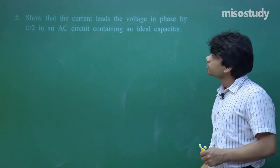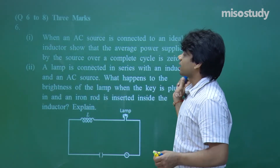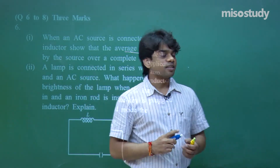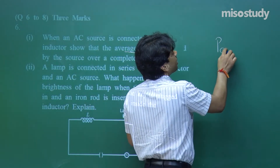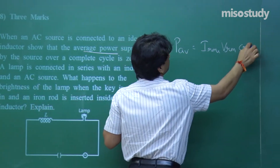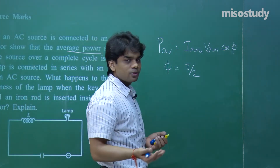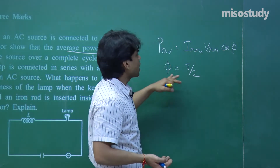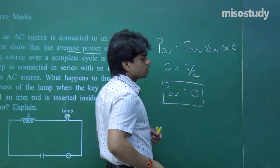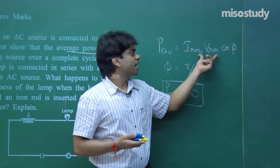The next one — question 6, a three-mark question: when an AC source is connected to an ideal inductor, show that the average power supplied by the source over a complete cycle is zero. Average power P = I_rms · V_rms · cosφ. For an ideal inductor, φ = π/2, and cos(π/2) = 0, so the average power dissipated will be zero. Very easy to make out.